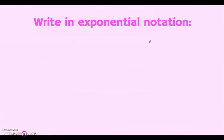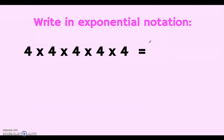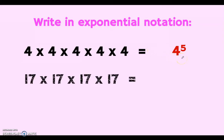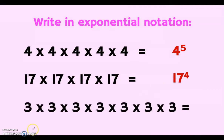Let's write in exponential notation. For the first example given in factored form, we identify the base, which is 4, and count the number of times it is multiplied: 1, 2, 3, 4, 5. Therefore, this is written as 4 to the 5th power, or 4 to the power of 5. Next, we have 17 times 17 times 17 times 17, which can be written as 17 to the 4th power.